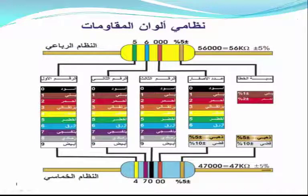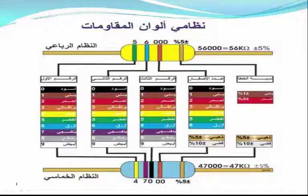مثال: إذا كانت الأشرطة تعطي قيمة 4700 أوم، فعند التحويل إلى كيلو أوم تصبح 47 kΩ زائد أو ناقص 5%. سنشاهد فيديو يوضح الطرق المختلفة لقراءة قيمة المقاومة. الطريقة الأولى هي استخدام قانون أوم: المقاومة = الجهد ÷ شدة التيار.